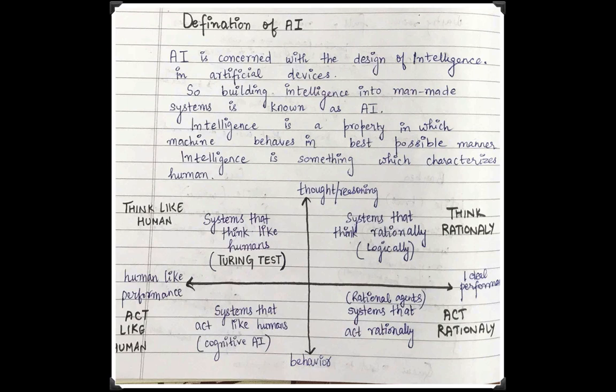Building intelligence into man-made systems is known as AI. Intelligence is the property in which machines behave in the best possible manner. Intelligence by human beings is also sometimes said to behave just like human beings.